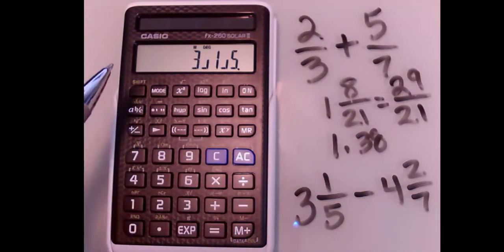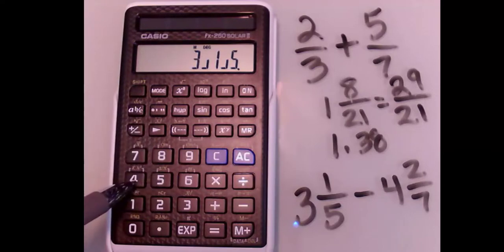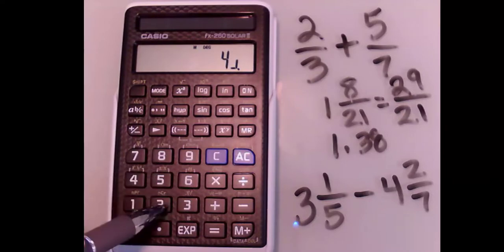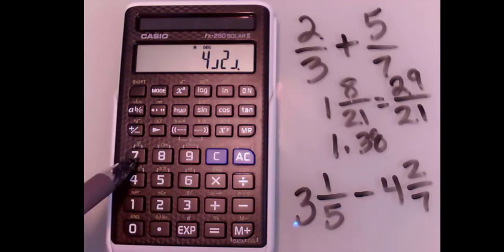Now I'm going to subtract 4. Here's the whole, so I have to hit this button to separate, and then my fractional part is 2/7.